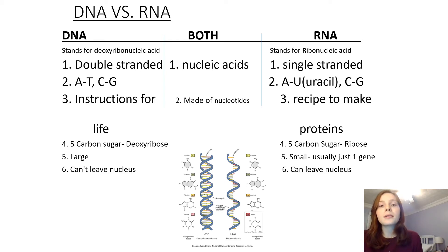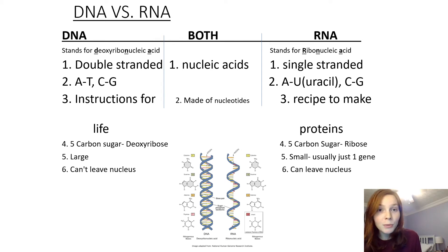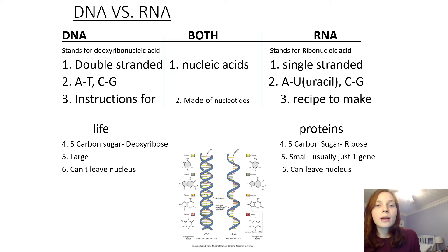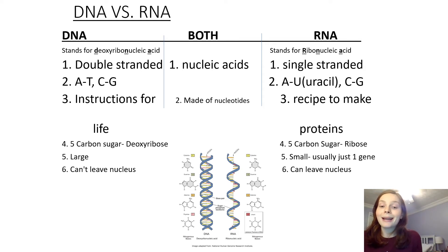RNA is single-stranded, not double-stranded, so that makes it even smaller. DNA cannot leave the nucleus — it's too big to fit out. So we need to get the information on the DNA out to the cytoplasm, where ribosomes make proteins. That's where RNA comes in. RNA acts as the messenger, taking the recipes from the nucleus to the cytoplasm through the nuclear pores, whereas DNA can't.